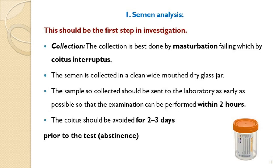Semen analysis is the most important and first investigation in infertility. The sample must be collected by masturbation or by coitus interruptus. It must be collected in a wide-mouth glass container and subjected to investigation as soon as possible, ideally within two hours. The sample must not be collected in a rubber container like a latex condom or any plastic container. There should be at least three days of abstinence before sample collection. Collecting without abstinence may lead to abnormal results in the form of oligospermia or decreased motility.